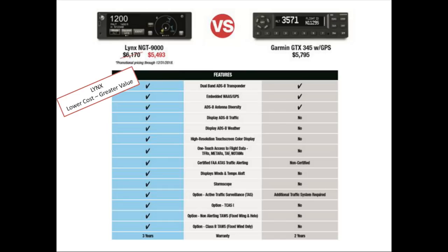The NGT 9000 also has the TCAS 1 option for Part 23 aircraft flying 135 operations or aircraft like the Beech 1900 that require TCAS 1 — we're the only ones providing that option. We've also talked about terrain vision and Class B TAWS. The biggest differentiator is the three-year warranty. We stand behind our product. We have very little warranty returns because we build these things to last. You're spending hard-earned dollars to meet this mandate — you want something you can install in the aircraft and use, without having to keep going back to the avionics shop for nuisance problems.